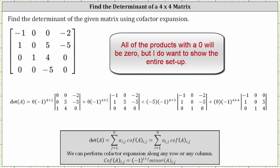We move on to the last element in row four, which is in row four, column four — again another zero. So we have plus zero times negative one raised to the power of four plus four, where the exponent is four plus four because the element is in row four, column four. Then we multiply by the determinant of the matrix formed by eliminating row four and column four, which leaves us with a three by three determinant where the first row is negative one, zero, zero; the second row is one, zero, five; and the third row is zero, one, four.